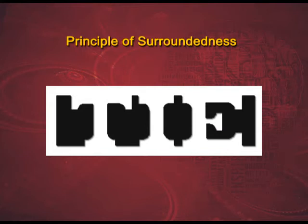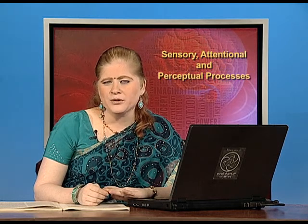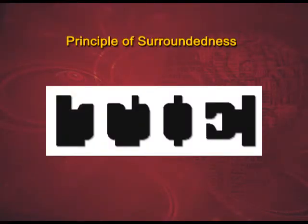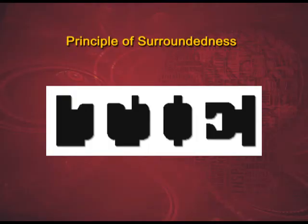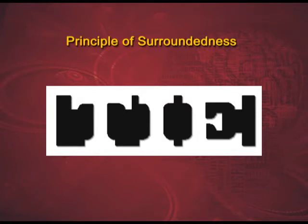Now we come to the principle of surroundedness. We see things surrounded by a background. Here, you will not be able to see the word TIE which is in white — you will rather look at the figures in black as separate figures and white as a background, because white is surrounding the black figures more. If you look at this figure closely, you will be able to detect T, I and E written in white, with black separating those alphabets. However, because white is surrounded even outside these alphabets, we tend to see the black ones as figures.